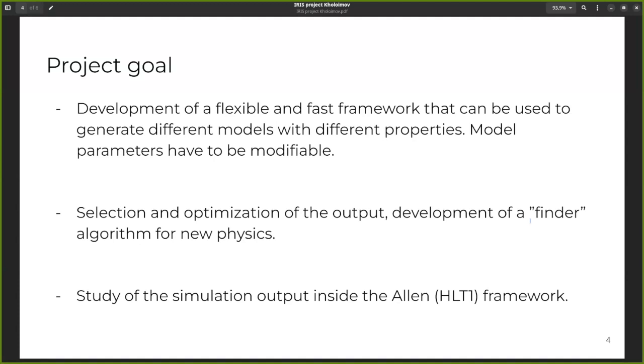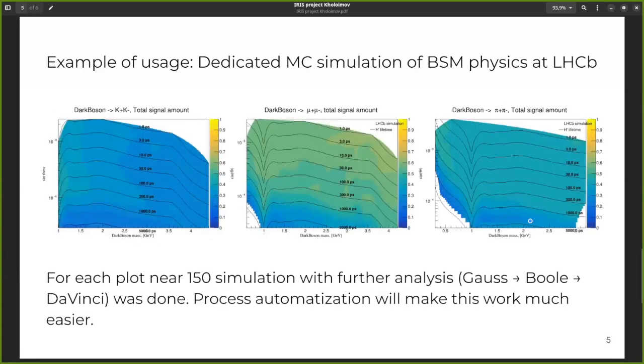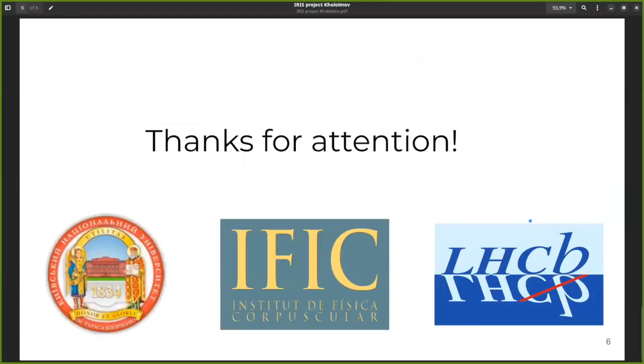So, all these simulations that created using this framework also that I had done before, they used in HLT1 algorithm development. An example of usage. Here you can see a signal amount of dark boson depends on different dark boson parameters like mass or lifetime. And for each of this plot, approximately 1,500 simulation was made using full chain like Gauss, Boole and DaVinci. And it can take a long time to do it. So, such framework development will help to make this work much easier and it will be a lot faster. Probably that's all. Oh, thank you, Valerie. Any questions?